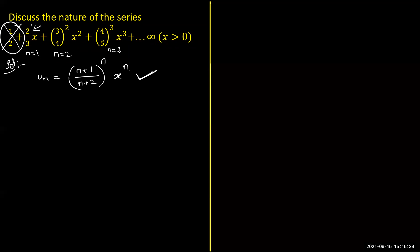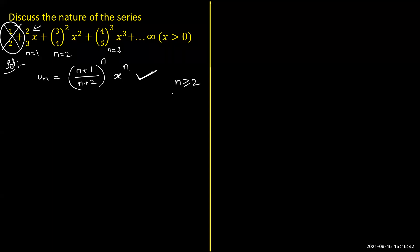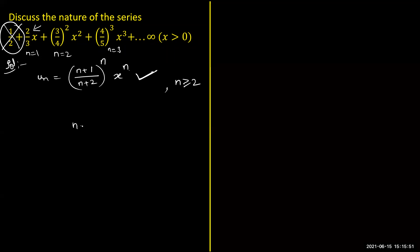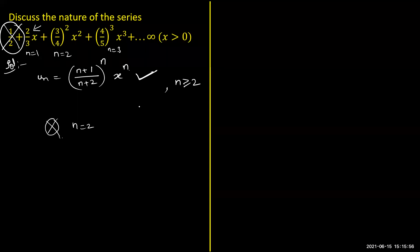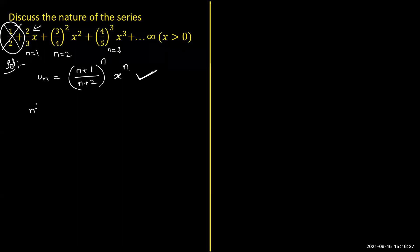Since convergence is unchanged by removal of finitely many terms, we take u_n = [(n+1)/(n+2)]^n × x^n. When the nth term is exactly like 'something whole to the power of n,' the nth root test is the most suitable. So we apply the nth root test: evaluate lim (n→∞) u_n^(1/n). Taking the 1/n power cancels the exponent n, and taking the limit as n→∞ gives simply x.